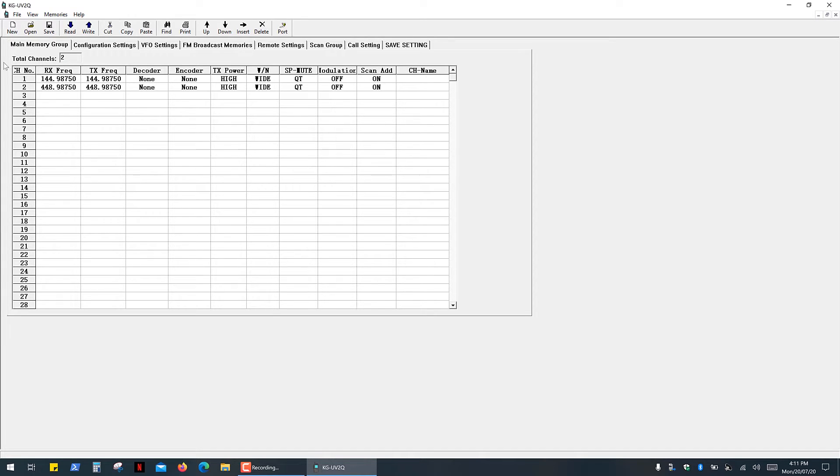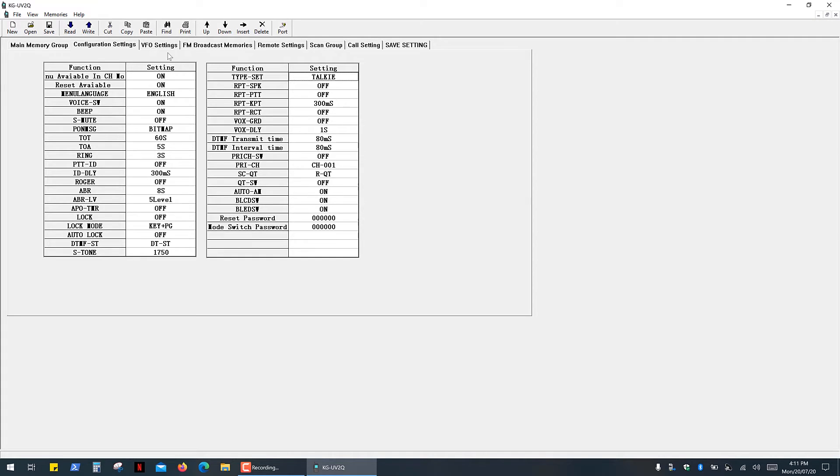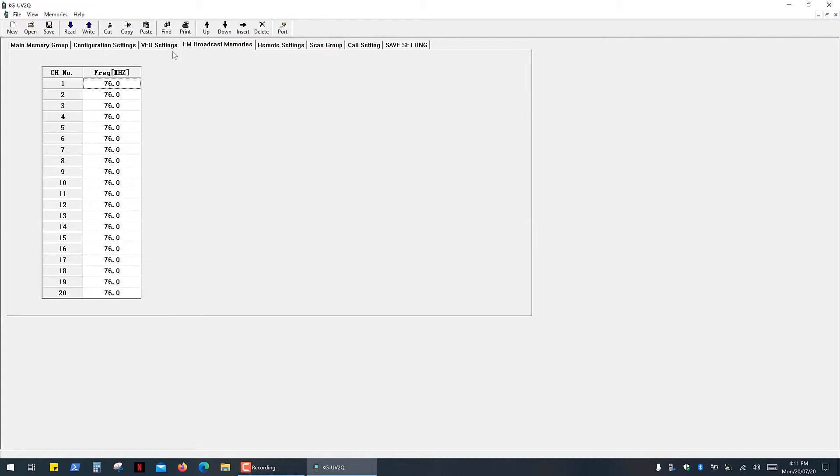So here you can add some frequencies and program repeaters. Here's my radio settings, VFO settings. Here you can add or edit FM broadcast stations.